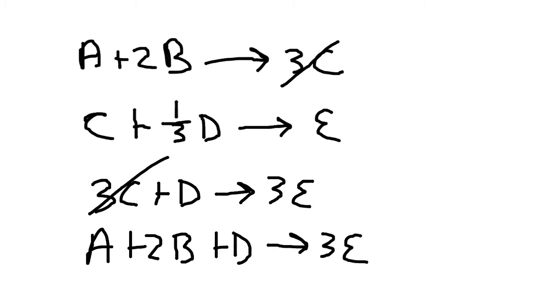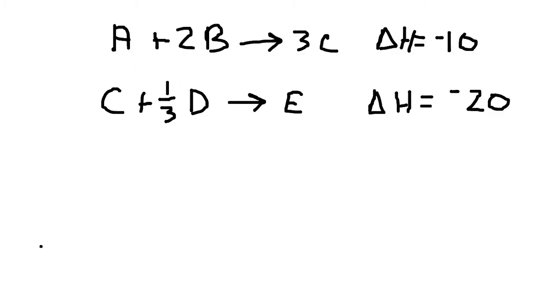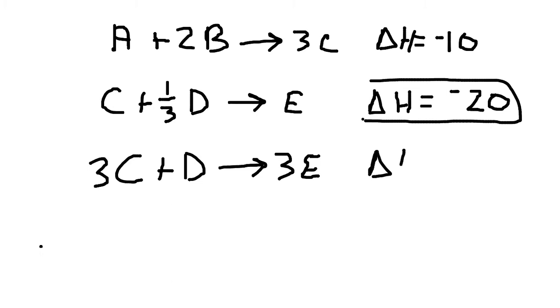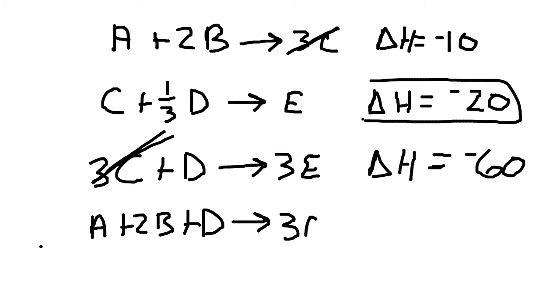But we have a problem that we have to overcome when we multiply because our enthalpy changes are only calculated for a given equation. For example, suppose in my imaginary formula that the change in enthalpy for the first equation is negative 10 and the change in enthalpy for the second equation is negative 20. When I multiply the second equation by 3, so I have 3C plus D yields 3E, then I have to multiply my change in enthalpy by 3 as well. So the change in enthalpy in this equation is going to equal negative 60. And then when I add these equations together, canceling out the 3C's, A plus 2B plus D yields 3E, then I just simply add the change in enthalpy of the equations and the change in enthalpy of the final equation is going to be negative 70.